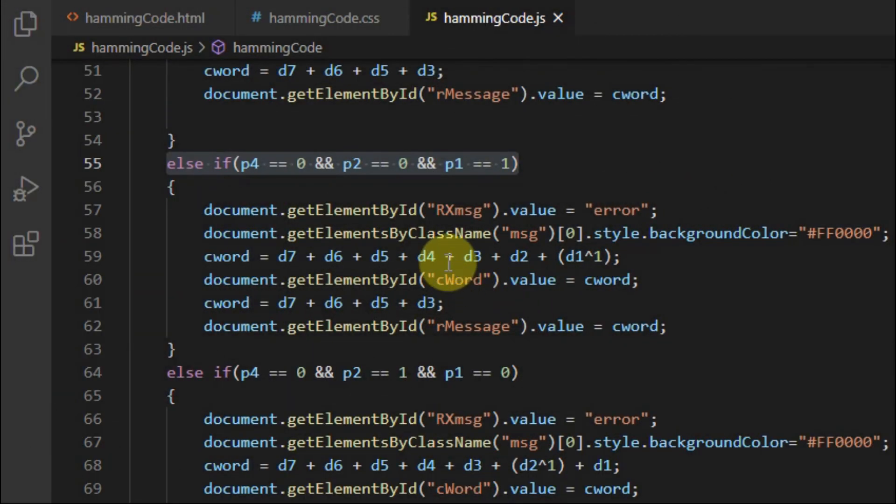Now if we have a non-zero value of the parity bits, let's say 0, 0, 1, it means that digit 1 is an error. So here we need to flip digit 1 to correct it, and then extract the message and pass it to the destination.